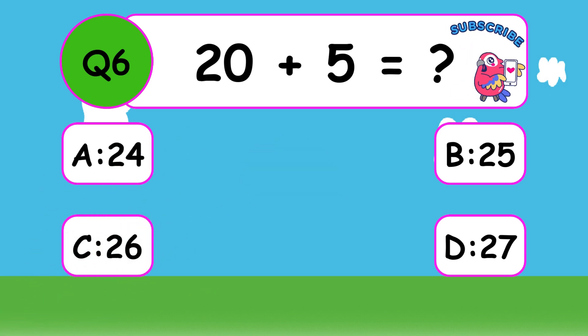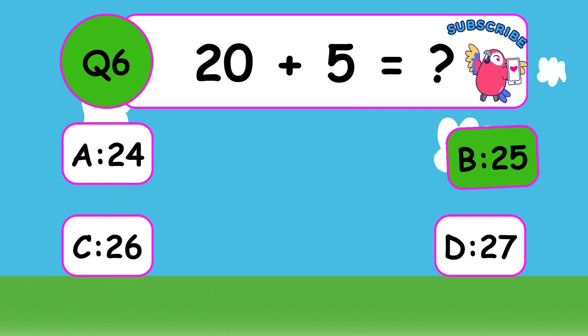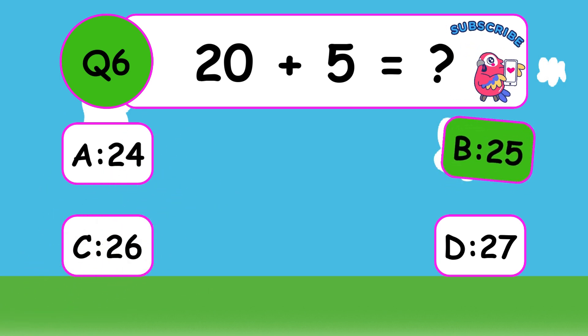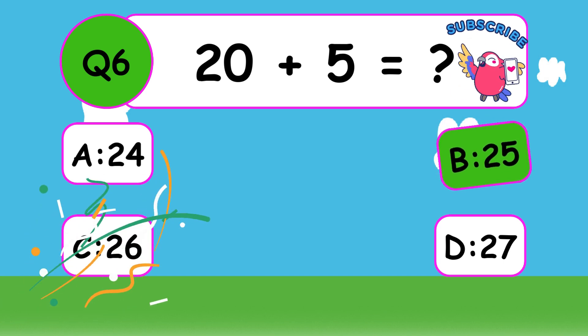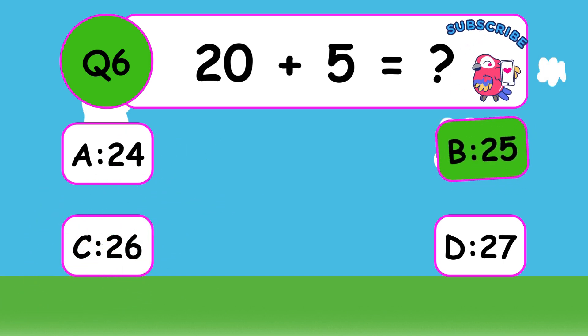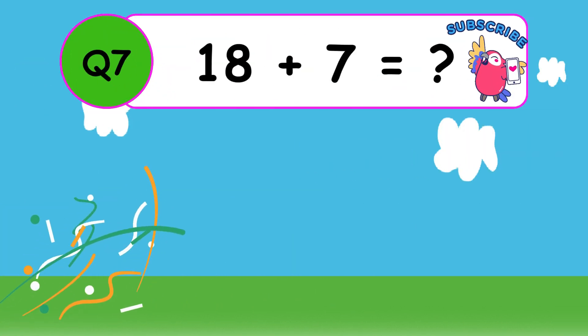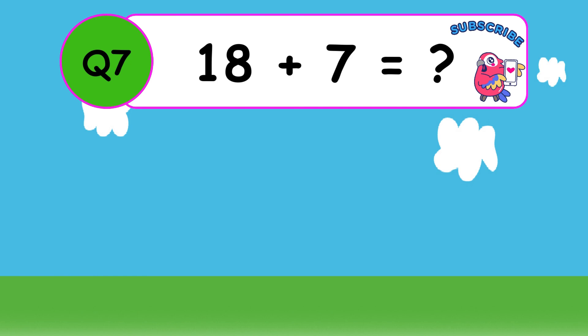What is 20 plus 5? The answer is B, 25. 20 plus 5 equals 25.